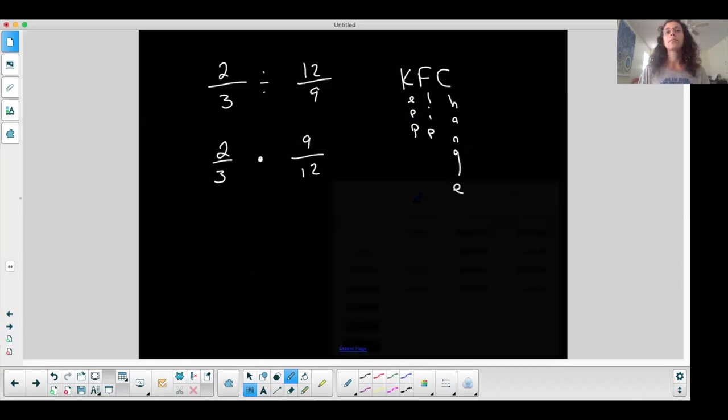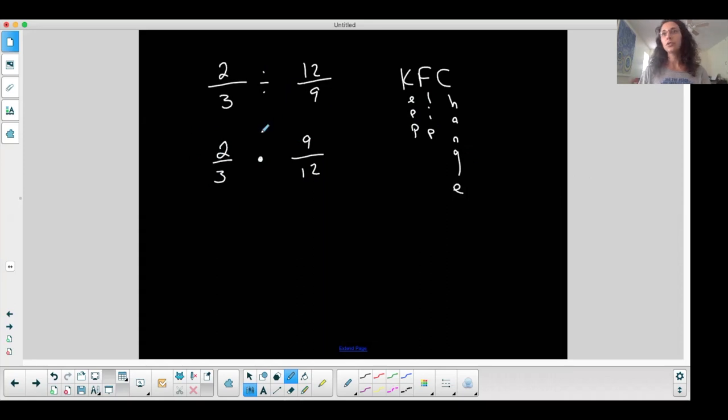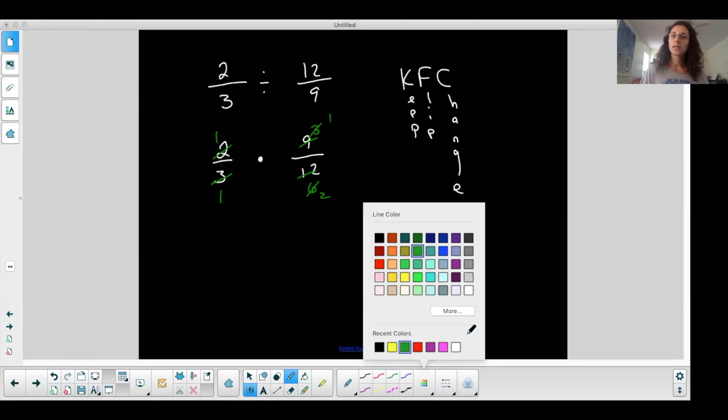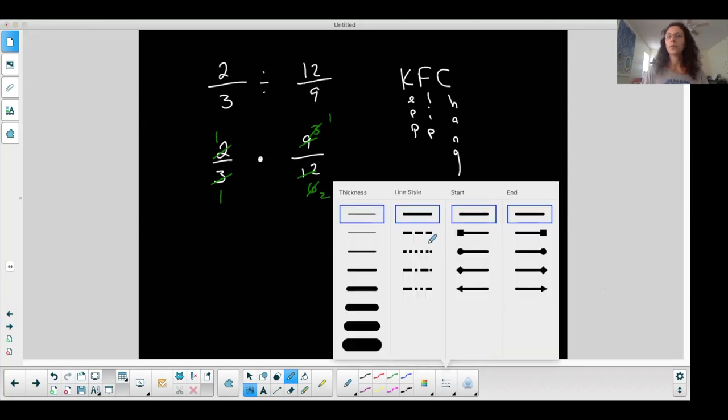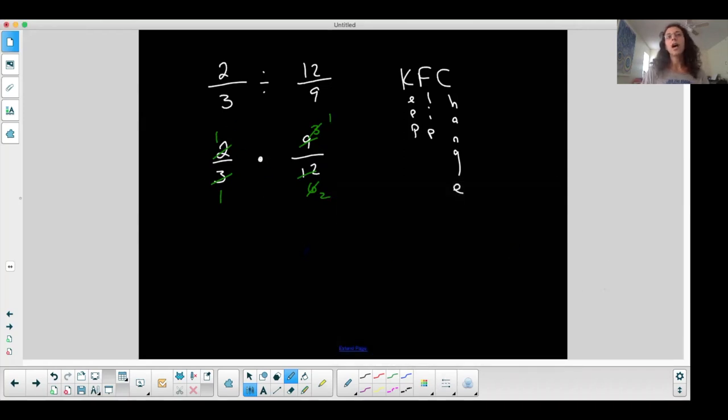I like to simplify first before multiplying, but two goes into two once, two goes into 12 six times, three goes into three once, three goes into nine three times, and look at this, three goes into three once, three goes into six twice. So I'm just simplifying real quick with numbers. Multiply across the top, multiply across the bottom, and the answer is one half.